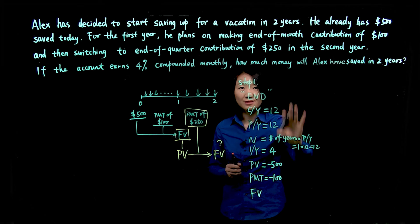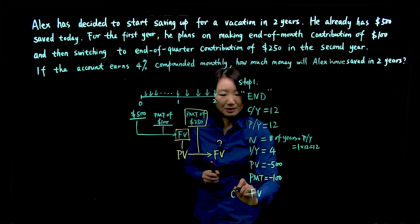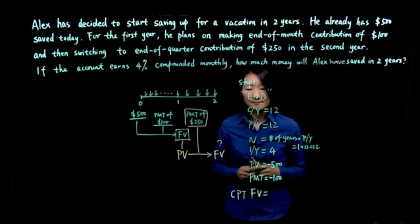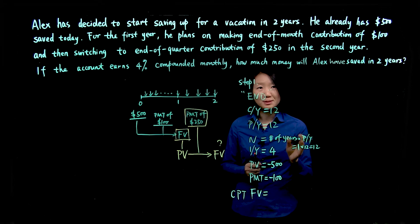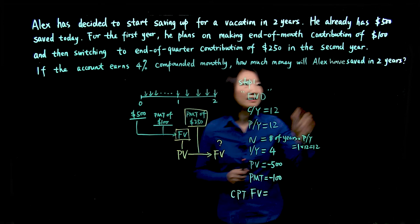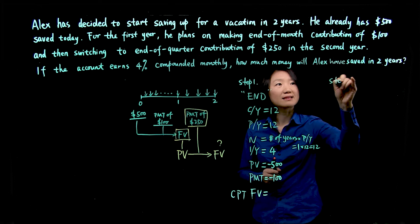And with all those six variables, we will be able to compute future value. And now again, keep in mind that future value will turn into the present value for the second step. Let's write out the second step.